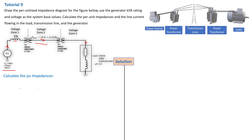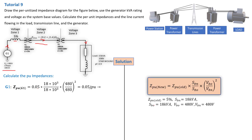For zone one, the voltage is 480 volts — that is the generator zone voltage. The new per unit value for the generator G1 is calculated as follows: Z per unit new equals Z per unit old, which is 5%, multiplied by (SB_new / SB_old) and (VB_old / VB_new)². Here SB_new is 18 kVA, SB_old is also 18 kVA because we are using the generator as the base, and both VB_old and VB_new are 480 V. Substituting into the formula gives us Z_G1 = 0.05 per unit.